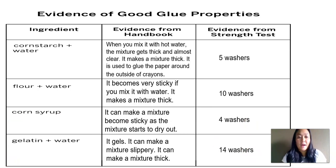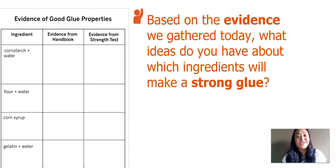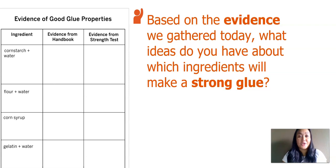This table shows that we gathered evidence from two different sources — we used the Handbook of Interesting Ingredients, our reference book, and we used evidence from our strength test. So based on the evidence we gathered today, what ideas do you have about which ingredients will make a strong glue? Go ahead and pause your video and think about this question. Based on what we read and what we found out from our strength test, I think that gelatin and water makes a strong glue. Do you have a similar idea or a different idea?